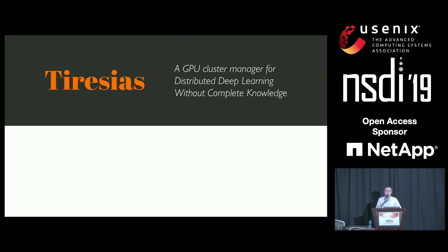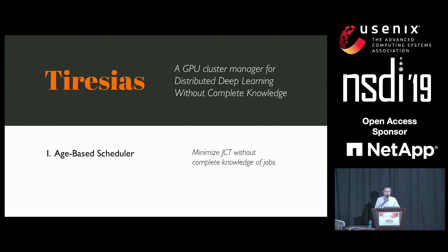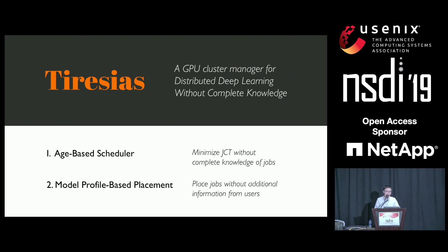So here we propose our system, Tiresias. In Tiresias, there is an age-based scheduler that can minimize job completion time without complete knowledge of the deep learning training jobs. Also, Tiresias can make placement decisions based on results from its model profiler, without requiring additional information from users.